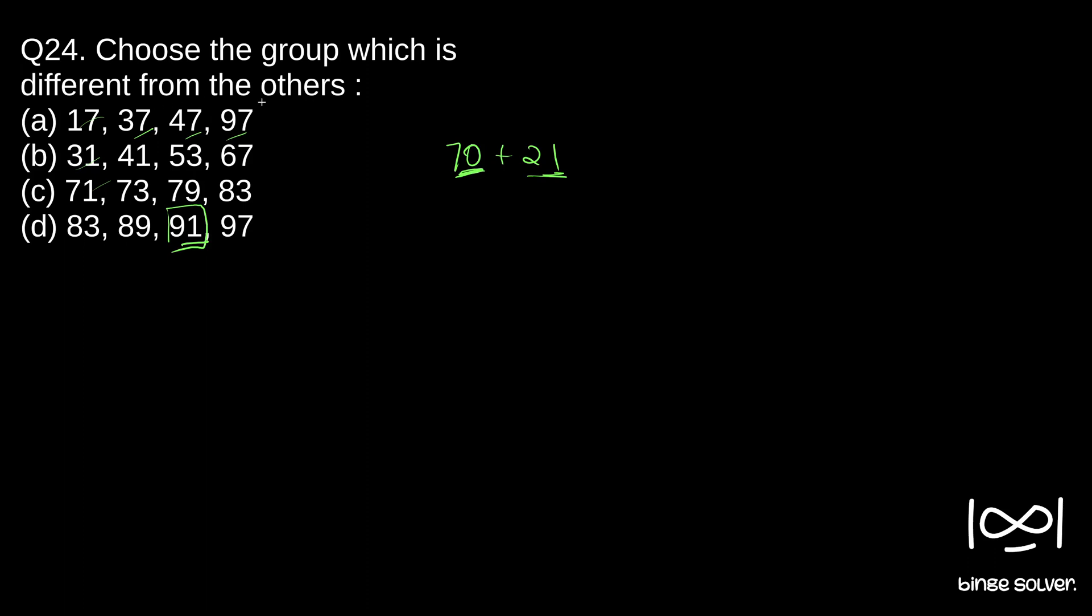So the group which is different from the others, if you look at this, this is not a prime number. So this is a group that is different from others. It has one non-prime number.